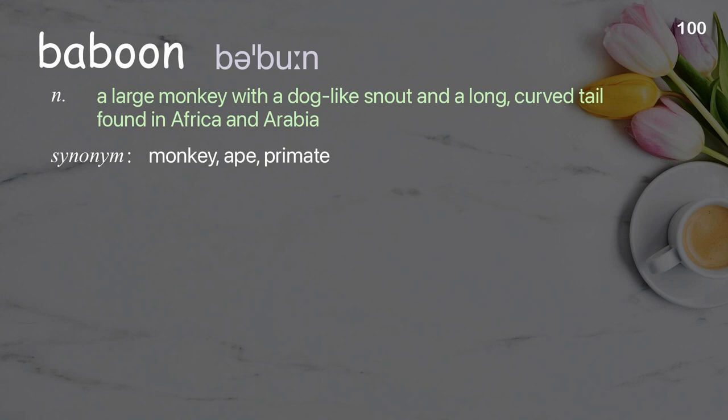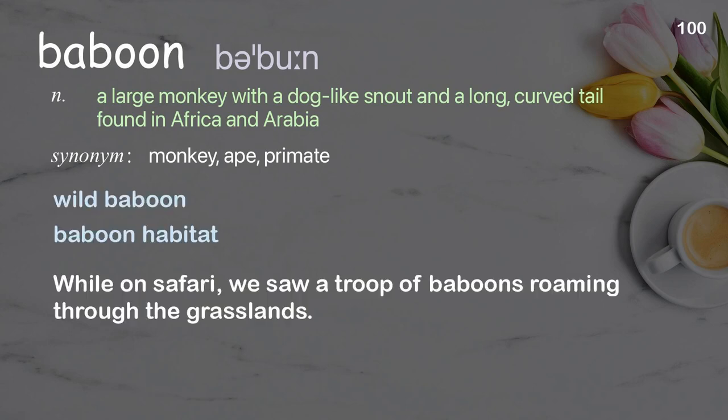Baboon: a large monkey with a dog-like snout and a long, curved tail found in Africa and Arabia. Examples: wild baboon, baboon habitat. While on safari, we saw a troop of baboons roaming through the grasslands.